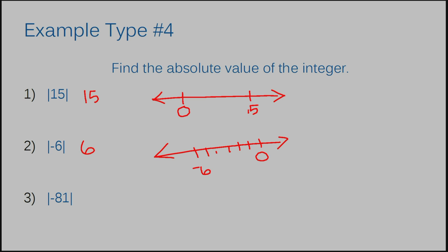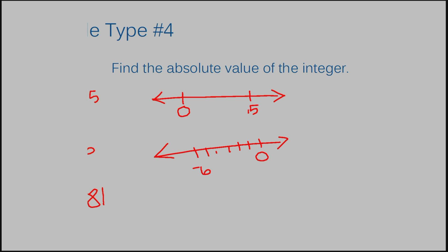The absolute value of negative 81 is going to be 81. I'm not going to draw a graph for this one, because we just know that means 81 spaces to the left of 0, and the absolute value is only asking how far it is away from 0, not which side. I hope this video helped give you a good, basic understanding of integers. That was my last example. Thanks for watching!